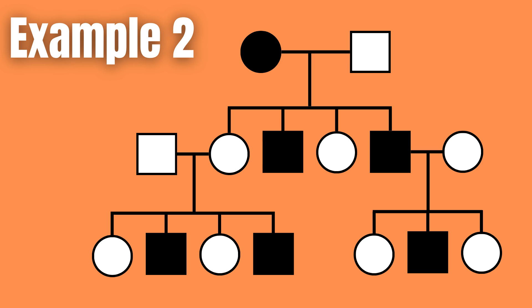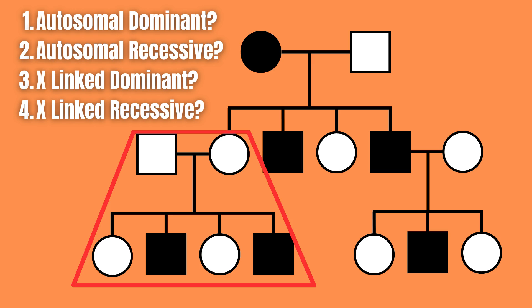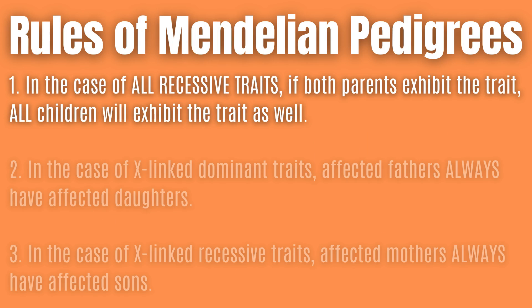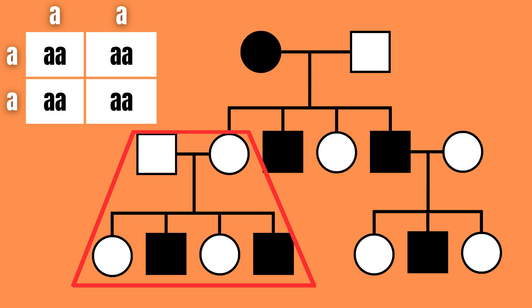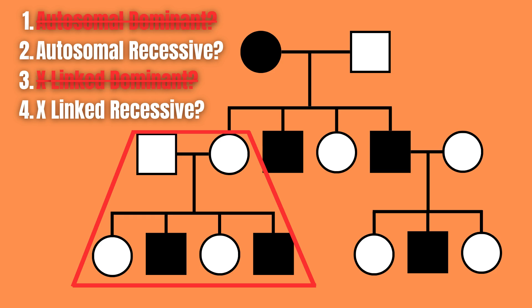Now let's move to example two. This example is trickier. However, after some consideration, one may realize that we can use an inverse of rule one here. Because if the trait was dominant, these parents would have to be recessive, and therefore all of their children would also express the trait as well, which is not the case. Therefore the trait cannot be dominant — it must be recessive.